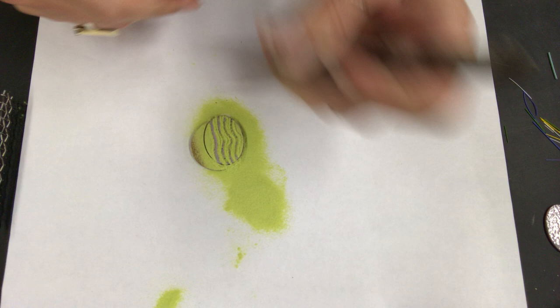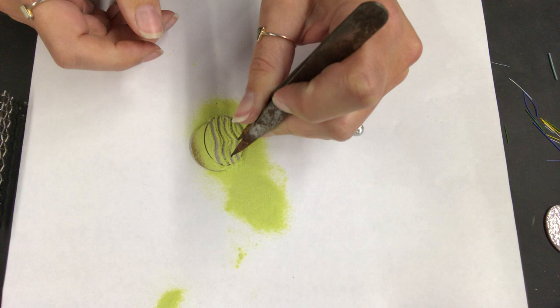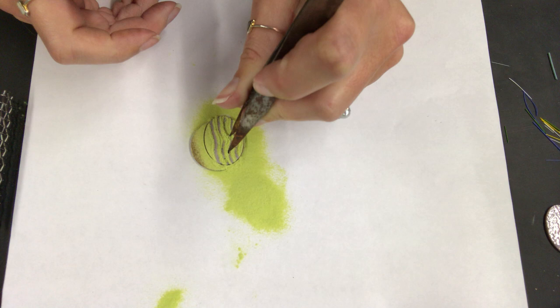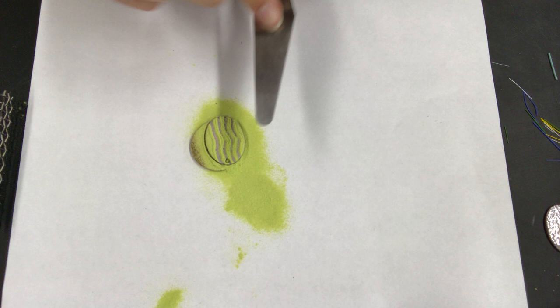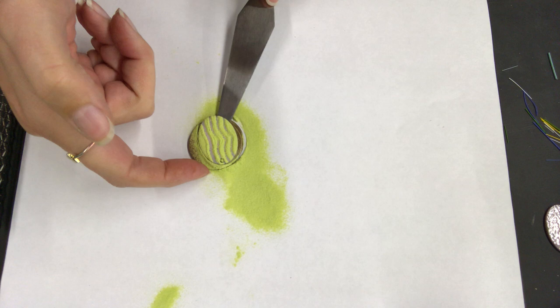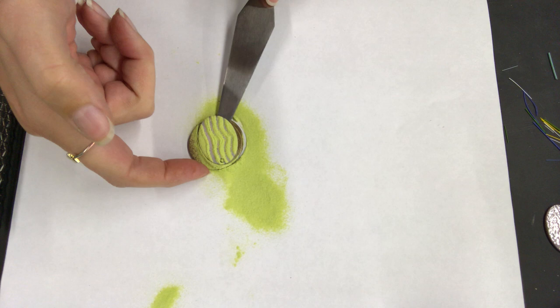So I did a pretty thick application. You could go a little thinner and maybe get better results. But I think this is going to turn out pretty cool. So that is sgraffito. Just sifting on a second layer and then scratching that design through to show that first color. So that one's done. I'm going to carefully pick it up with my palette knife, transfer it over to my grate, and then that's ready for firing.